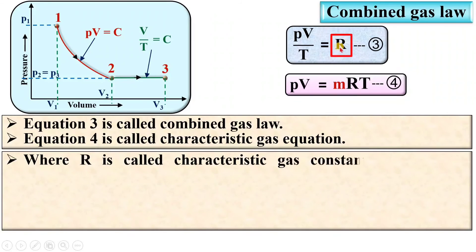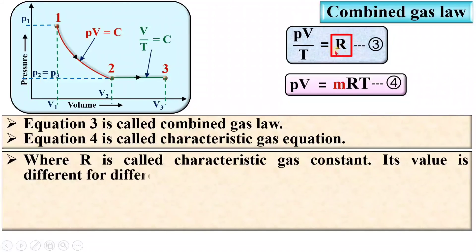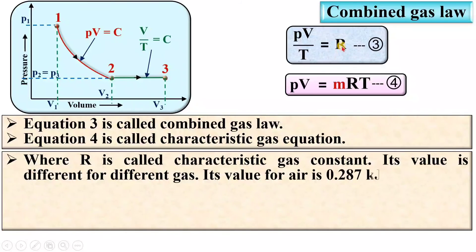R is called the characteristic gas constant and its value is different for different gases. Its value for air is 0.287 kJ per kg Kelvin.